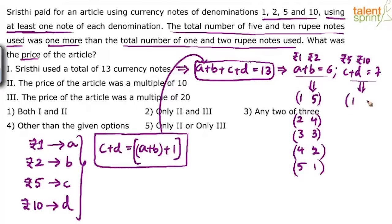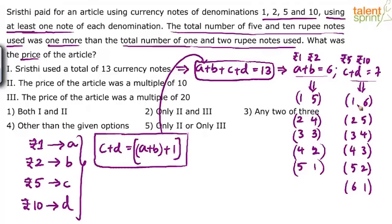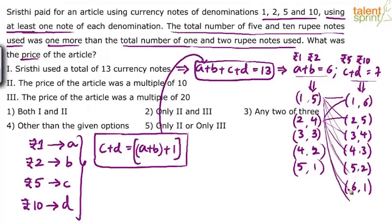For C plus D equal to 7, solutions include: C=1, D=6; C=2, D=5; C=3, D=4; C=4, D=3; C=5, D=2; C=6, D=1. Each pair of A,B values can be combined with each pair of C,D values. With 5 solutions for A,B and 6 solutions for C,D, there are 5 times 6 equals 30 different possible prices for the article.